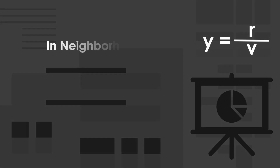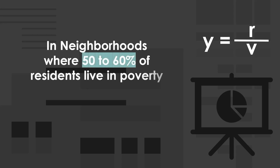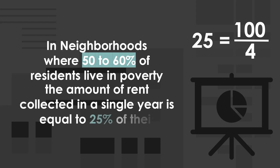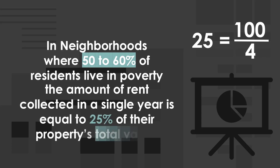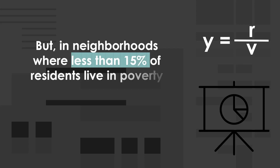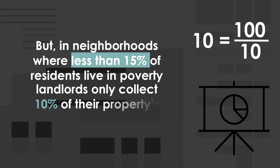In neighborhoods where 50 to 60 percent of residents live in poverty, the amount of rent collected in a single year is equal to 25 percent of that property's total value. This means that in lower income communities there is a higher exploitation rate, compared to neighborhoods where less than 15 percent of residents live in poverty and landlords are only collecting 10 percent of the property's total value.